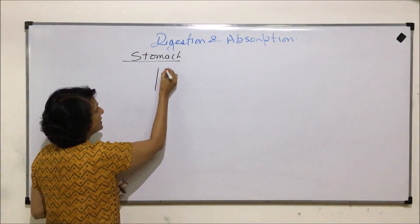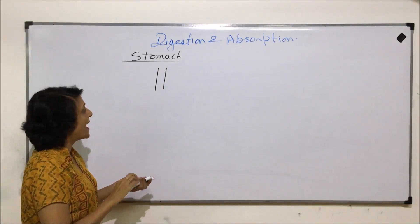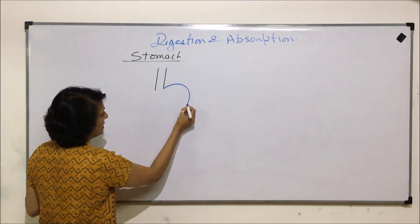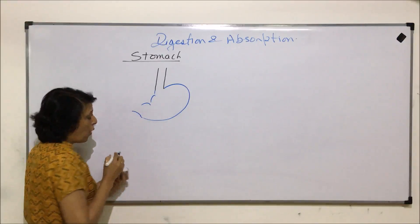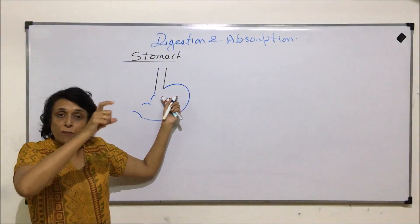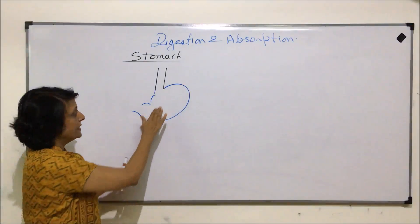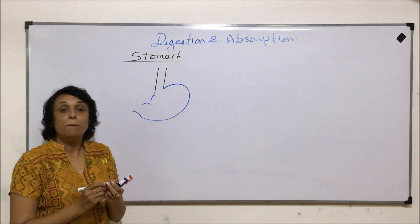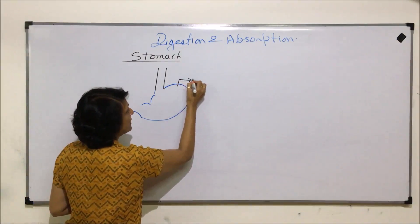The esophagus opens into this muscular bag-like structure. The stomach is obliquely placed below the diaphragm, slightly on the left-hand side. It is a distensible bag and it is divided into four parts. This bulging part which we see is known as the fundus.